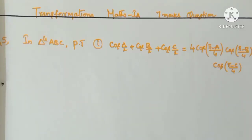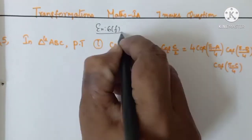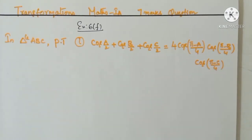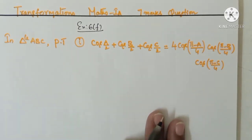Dear students, welcome to ABHI online classes. In this transformations chapter, maths 1A paper, we cover 7 marks questions. Fifth question in exercise 6EF: In triangle ABC, prove that cos A/2 + cos B/2 + cos C/2 is equal to 4 cos((π−A)/4) · cos((π−B)/4) · cos((π−C)/4).